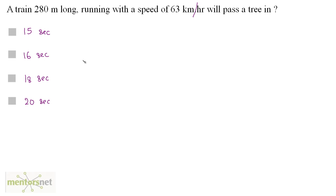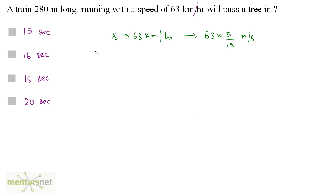A train 280 meters long running with a speed of 63 km per hour will pass a tree in how long? The train will have to cover its own length in order to pass this stationary object, which happens to be a tree. We have been given the speed as 63 km per hour. Let's convert this into meters per second: 63 times 5 by 18 meters per second. The distance to be traveled is the train's length, which is 280 meters.